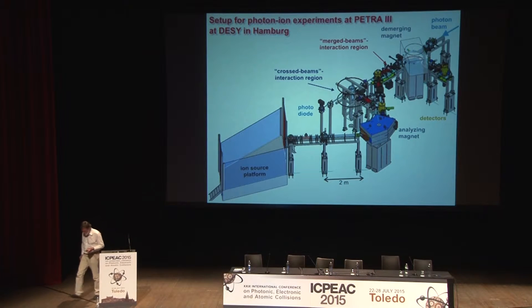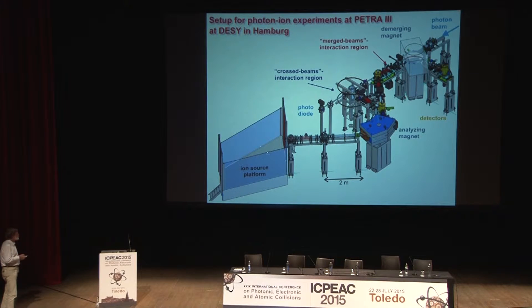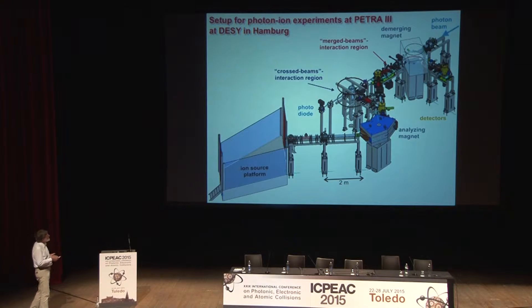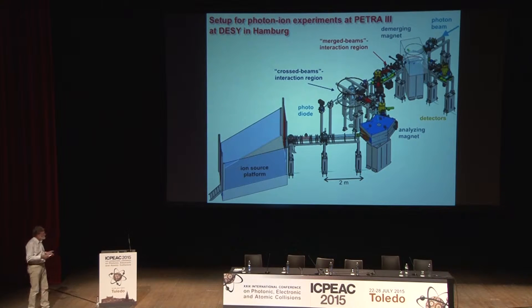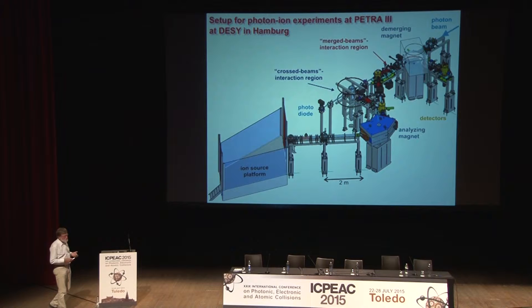Here's a sketch of our experimental setup. We produce ions on an ion source platform, accelerate the ions, and let the ions pass an analyzing magnet which selects ions of a given mass and charge. We transport the ions into the region where they interact with a photon beam from a synchrotron, in this so-called merged beams section. The photoionized products are separated by the second magnet — the demerging magnet — from the parent ion beam, and the ions are detected in a suitable detection unit.